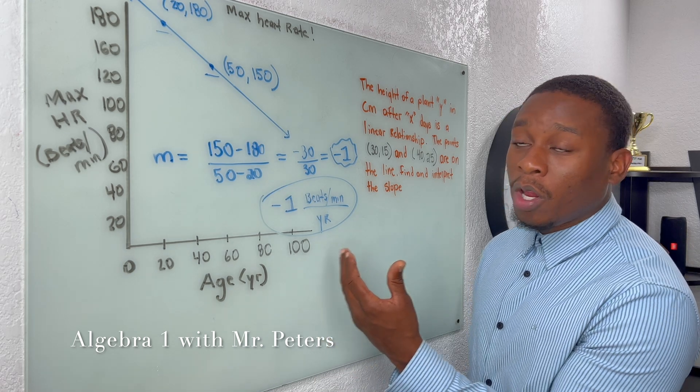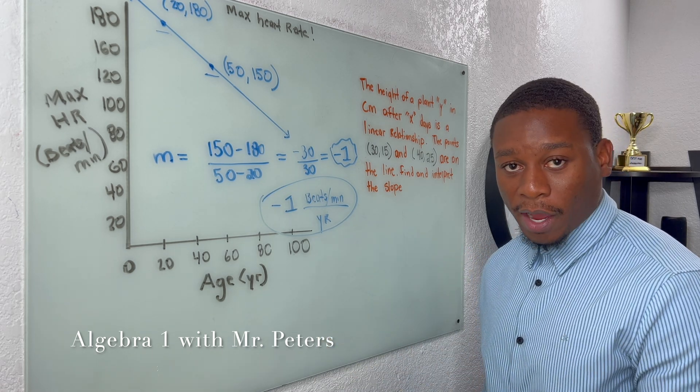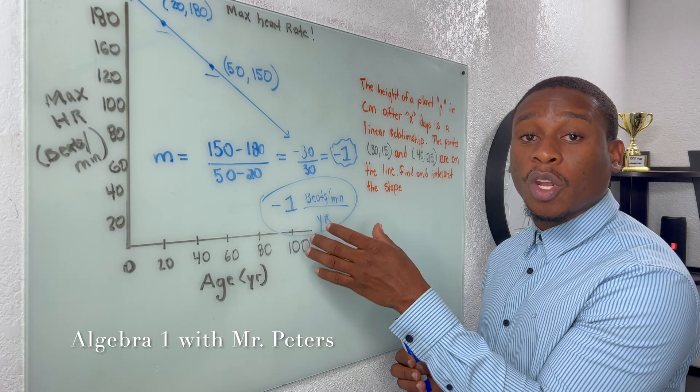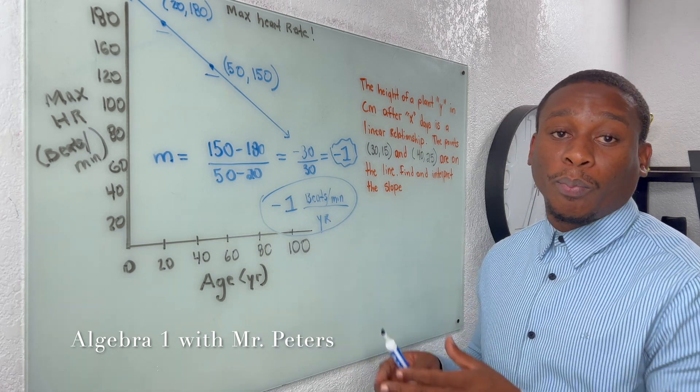So as we get older, the heart rate is going to go down. This is what it means in this problem, and this is what the slope interprets to in the problem.